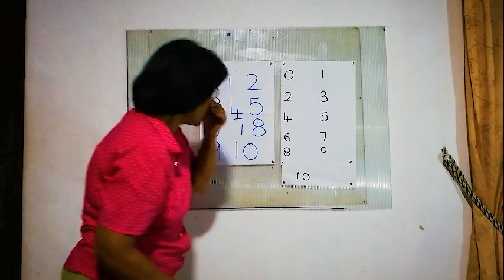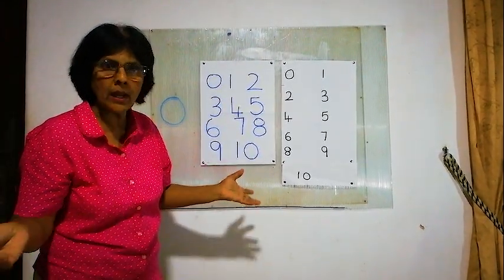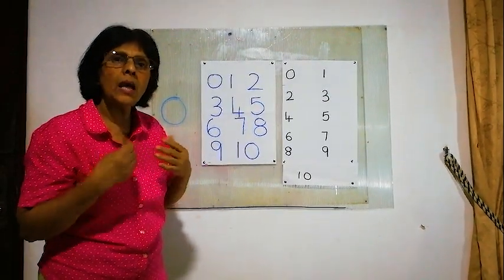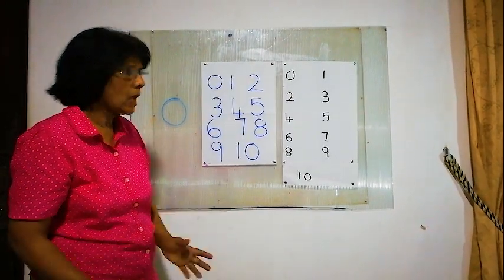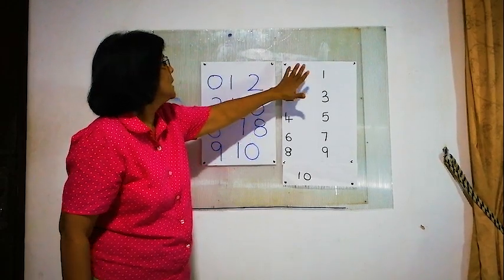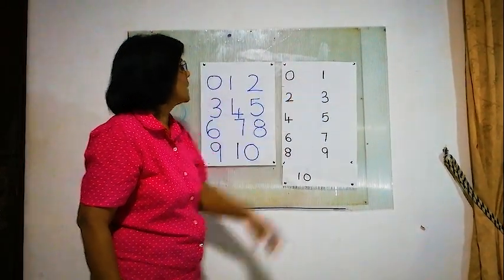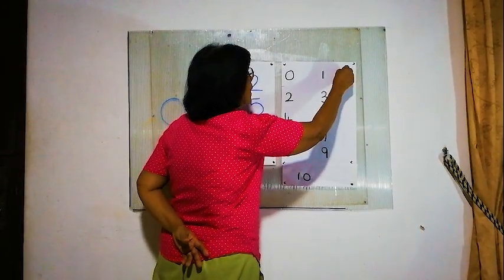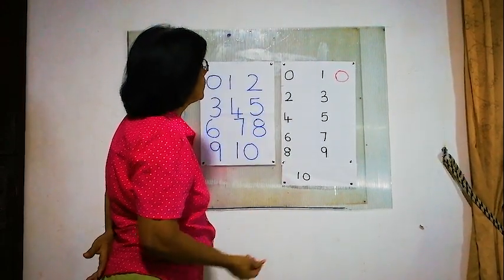Now, we will see whether there is a value for 0. Is there a value for 0? No — no value. 0 means nothing. So we can't draw anything for 0. For 1, we can draw 1 ball.